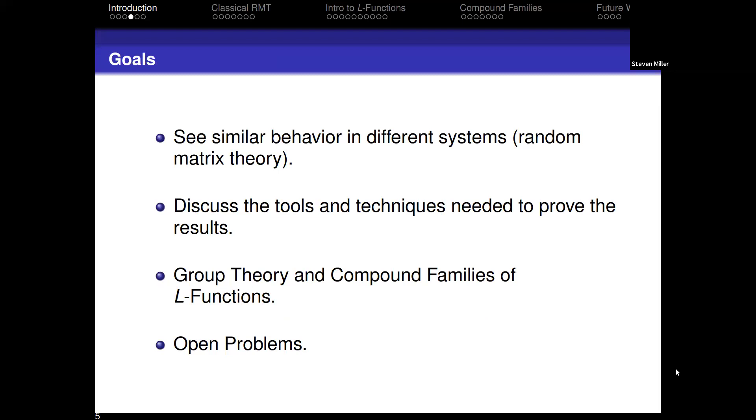We want to try to find ways to model the zeros of L-functions to get information about them. What I want to show you is that we see very similar behavior in many different systems in mathematical physics, in number theory, in group theory, and I want to discuss some of the tools and techniques. The general approach is very similar for all these problems. How you do the calculations is specific to whatever subject you do. Random matrix theory is a lot easier than number theory in terms of just the algebra you need to do.